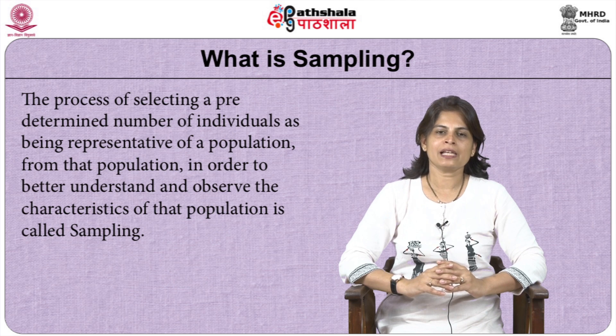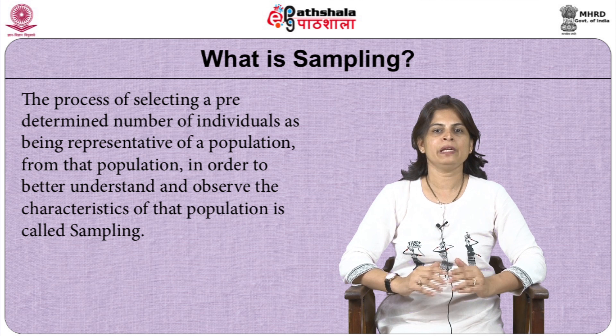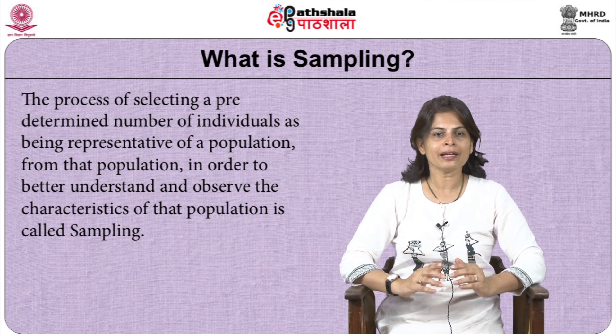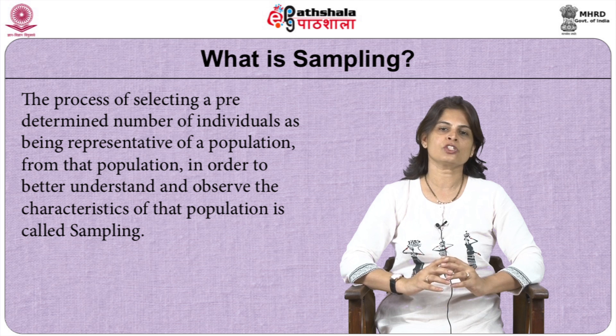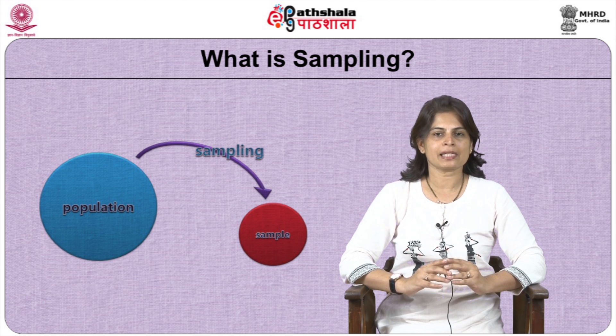Let us try to understand what is sampling. The process of selecting a predetermined number of individuals or units as being representative of a population from that population, in order to better understand and observe the characteristics of that population, is known as sampling. When the population being studied is too large to be covered in totality, and selecting each and every unit is more cumbersome and expensive, a sample is selected as a representative of the population and thereby studied.